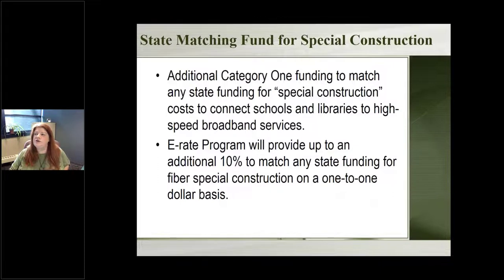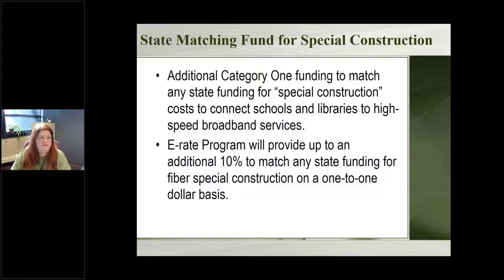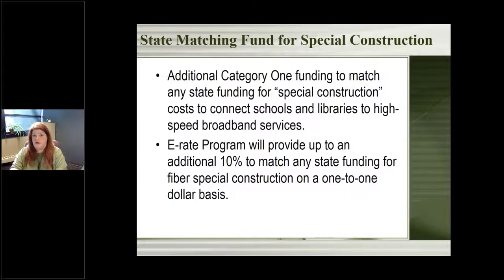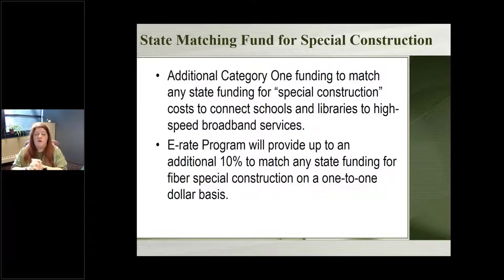Related to special construction, the E-rate program has what they call their state matching fund — a little extra E-rate discount money you can receive. This is additional funding: if your state comes up with money to help pay for the amount the library has to cover, E-rate will match that. For example, you receive 80% off — that's your E-rate discount — and you're responsible for the extra 20% cost. If your state has a pot of money and says we'll help pay for part of that, E-rate will match. So that extra 20% could be covered by state funds and then even a little more by E-rate funds.